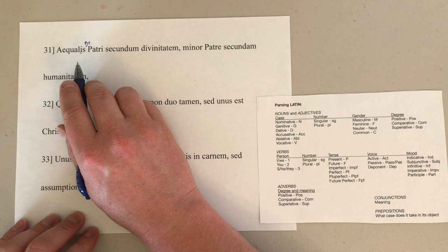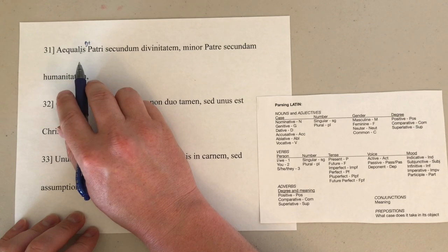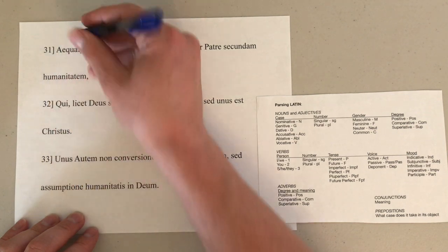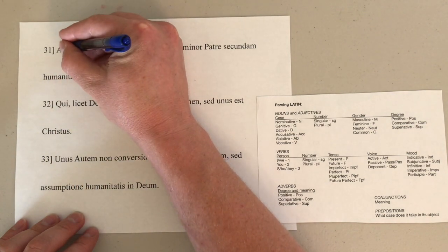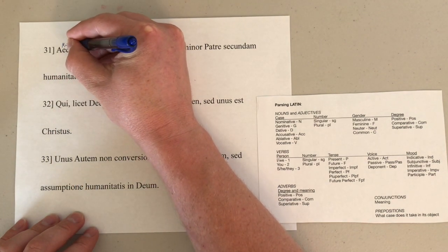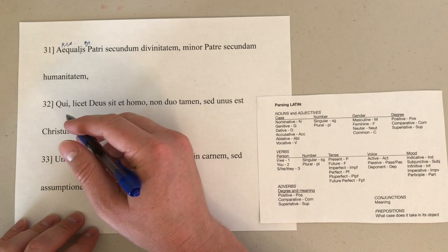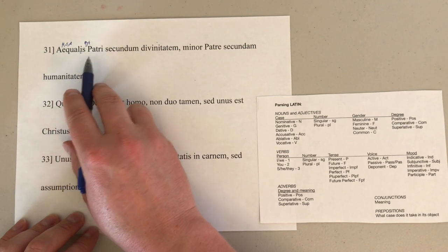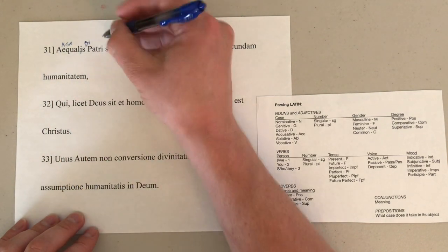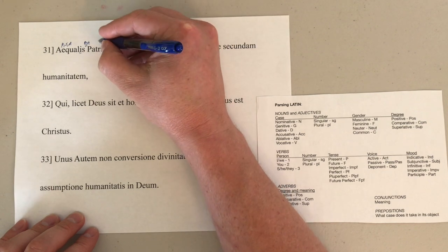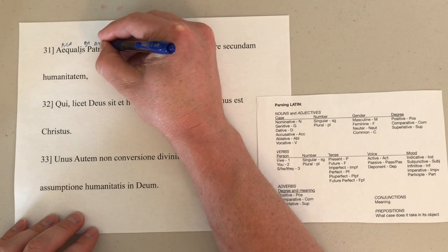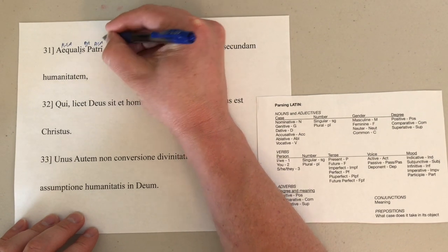Aequalus is either the nominative singular or the genitive singular form. We have no other good option here for a subject, so that makes the most sense. Singular masculine. Still speaking, of course, about Jesus. Equal — and aequalus takes the dative in its case — which we see here with this -i: patri, dative, singular, and masculine.